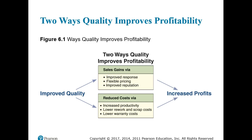Studies have shown that high quality products are positively correlated with profitability. Improved quality leads to sales gains via improved response, flexible pricing, and improved reputation. It also results in reduced costs via increased productivity, lower rework and scrap costs, and lower warranty costs — all resulting in increased profits. Going back to Chapter 1, productivity can be considered increased if you have lower inputs, even with the same outputs.